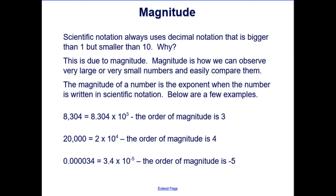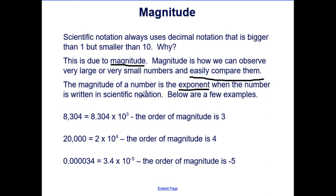Scientific notation always uses decimal notation that is bigger than one but smaller than ten. This is due to magnitude. Magnitude is how we can observe very large or very small numbers and easily compare them. The magnitude of a number is the exponent when the number is written in scientific notation.